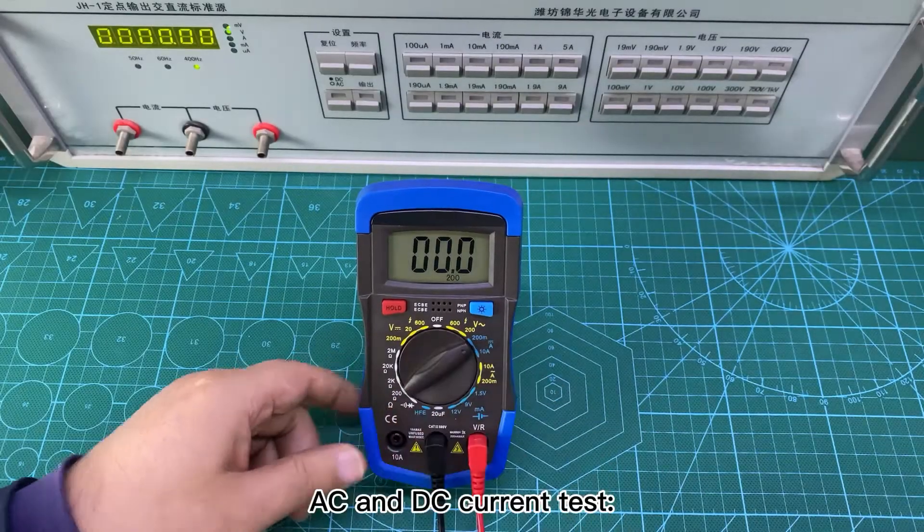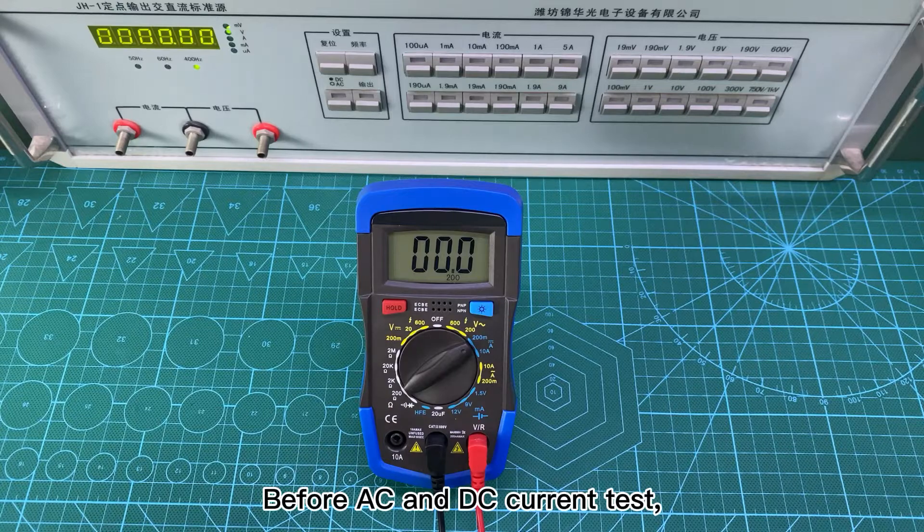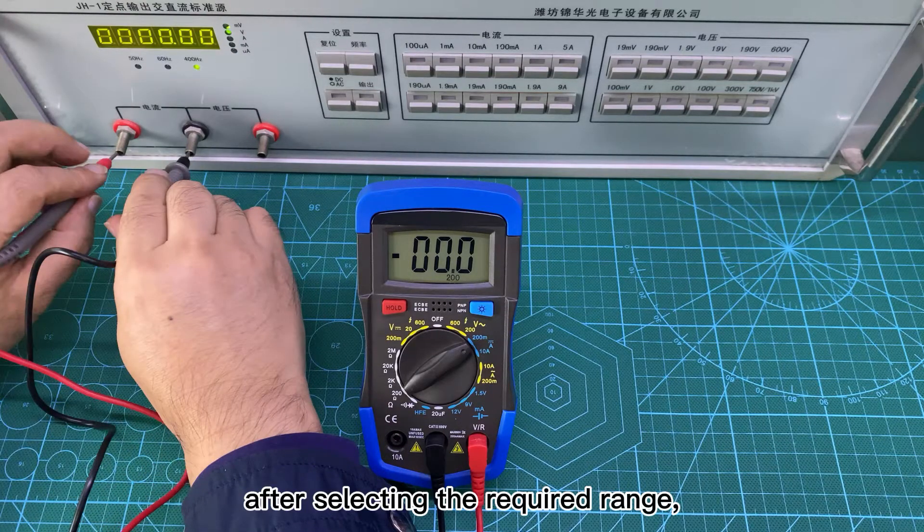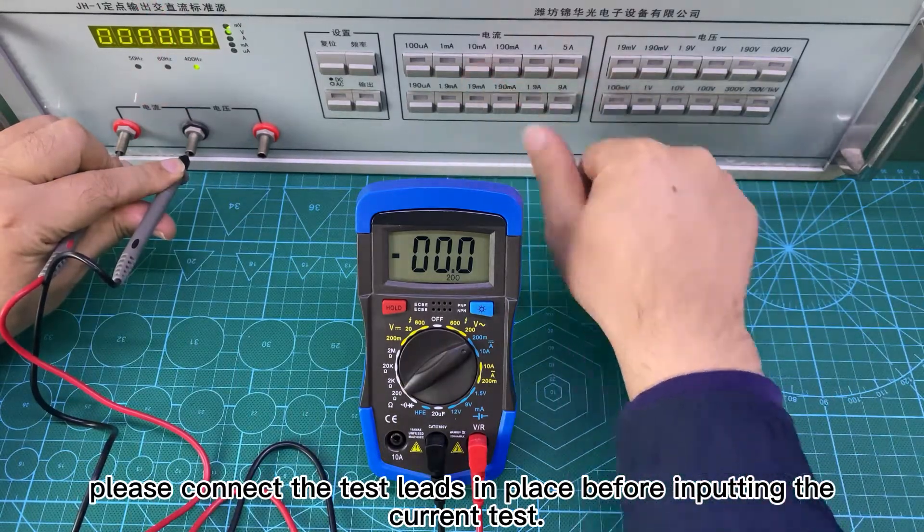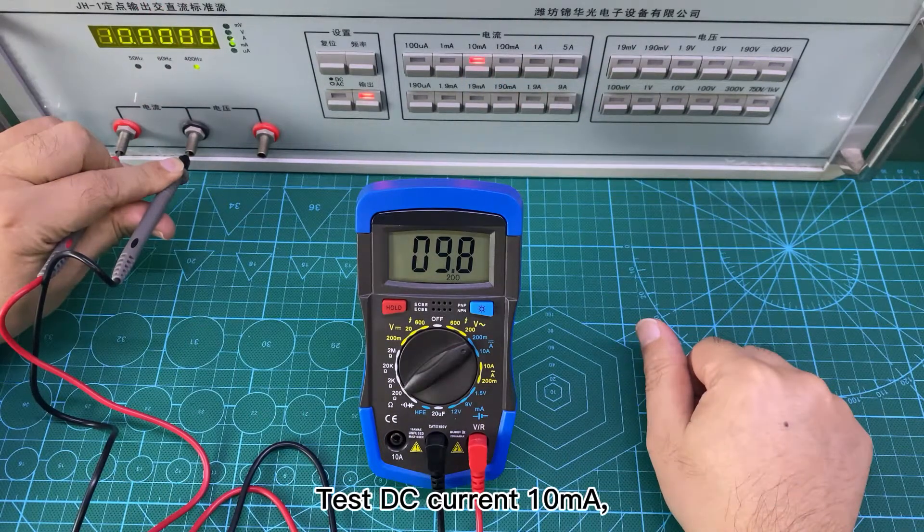AC and DC current test. Before AC and DC current test, after selecting the required range, please connect the test leads in place before inputting the current test. Test DC current 10V.